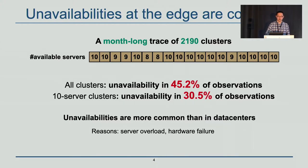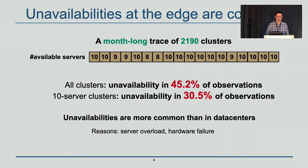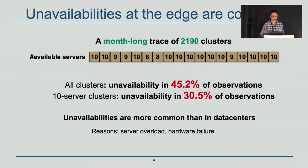Why is unavailability so common at the edge? There are a couple of reasons. For example, servers at the edge are directly exposed to the outside world, and there are a limited number of servers at each edge cluster, so server overload can happen very often. And when a server becomes overloaded, it will be removed from service. There is also software installation and hardware failure in servers at the edge.